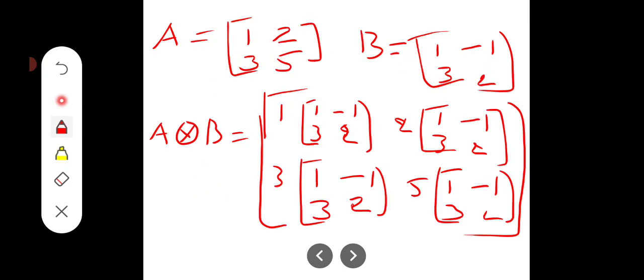So let us see one university problem. Here A is equal to [1, 2; 3, 5] and B is equal to [1, -1; 3, 2].